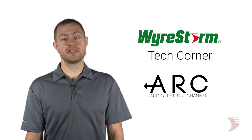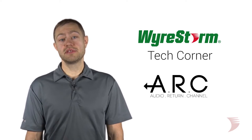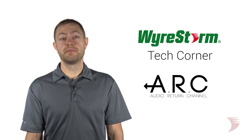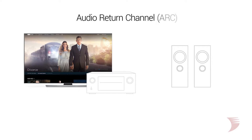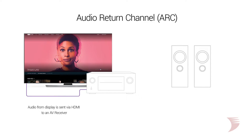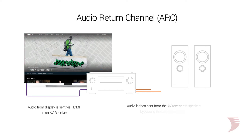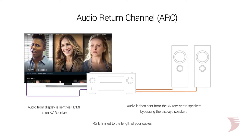You may be wondering, what is ARC and how is it used in a system? Audio Return Channel, commonly known as ARC, is the ability to take an audio signal from a display through an HDMI cable and transmit the data to an AV receiver or audio processor. This gives the user the ability to bypass the display's built-in speakers to allow for a more immersive audio experience.